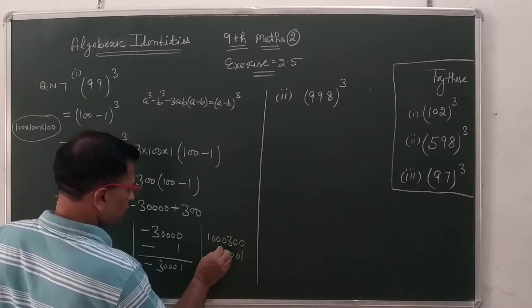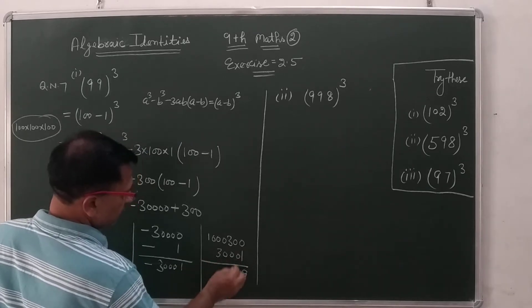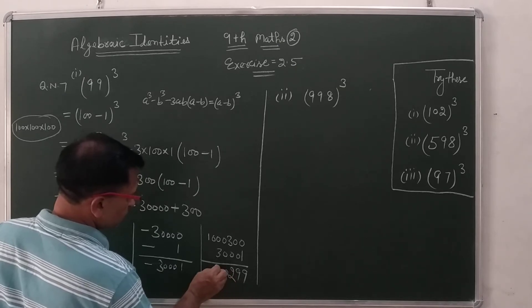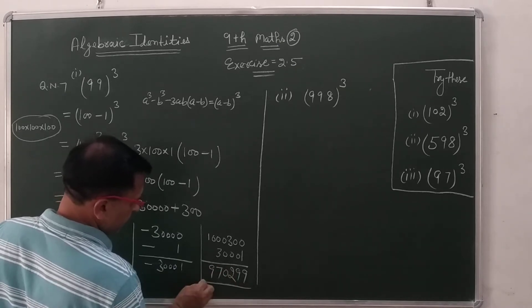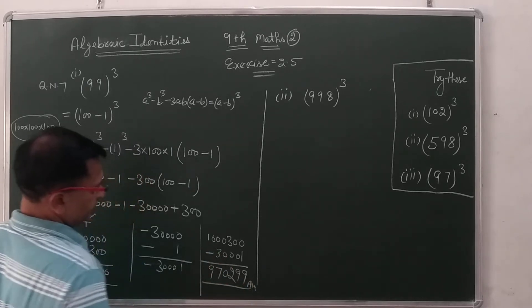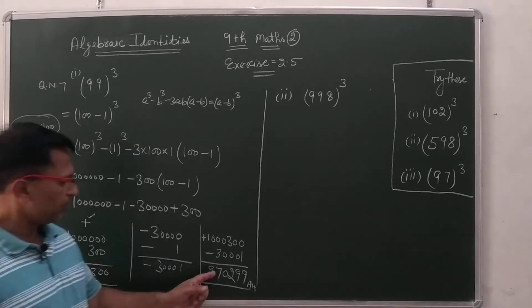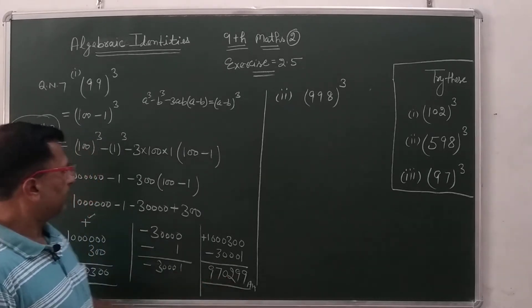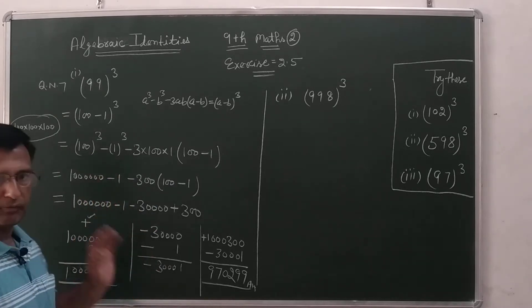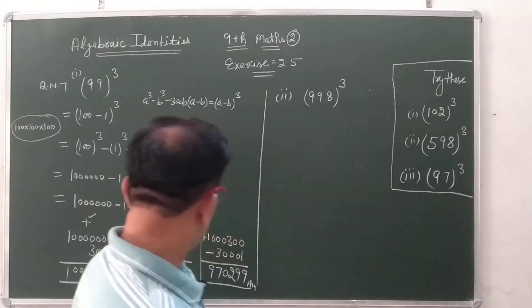We subtract here 9 and 970299. This is the answer. So 970299, it is the cube of 99 with the algebraic identity, with the help of algebraic identity.